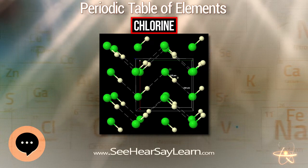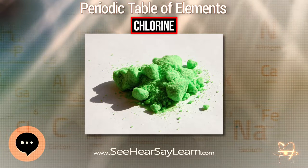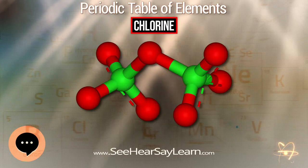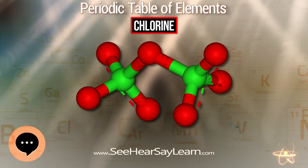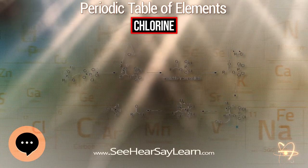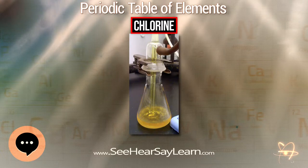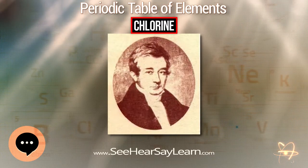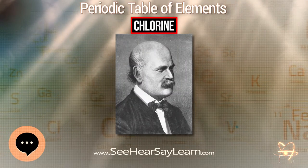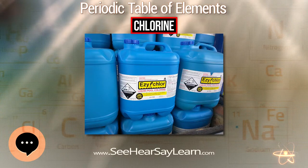Beyond a 1:1 mixture of HCl and H₂O, the system separates completely into two separate liquid phases. Hydrochloric acid forms an azeotrope with boiling point 108.6°C at 20.22 g HCl per 100 g solution; thus hydrochloric acid cannot be concentrated beyond this point by distillation. Unlike hydrogen fluoride, anhydrous liquid hydrogen chloride is difficult to work with as a solvent because its boiling point is low, it has a small liquid range, its dielectric constant is low, and it does not dissociate appreciably into H₂Cl⁺ and HCl₂⁻ ions.